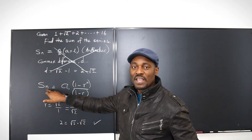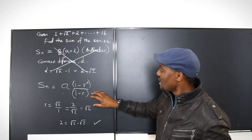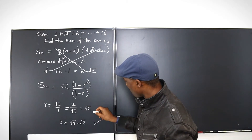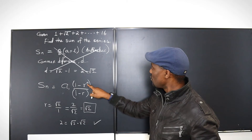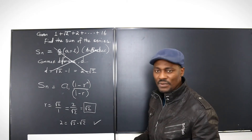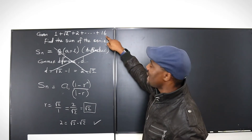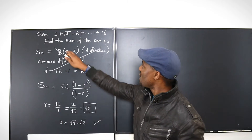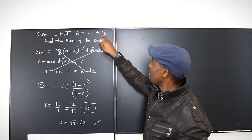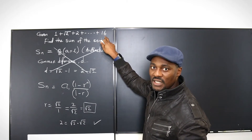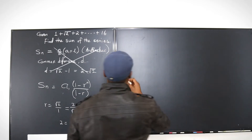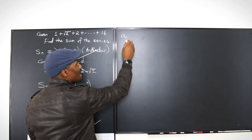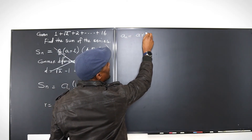Because it's a geometric series, I'll use the geometric sum formula. I have my first term, which is 1, and my common ratio, which is √2. I just need to know the number of terms. We know the last term: if the series has n terms, then the nth term is the last term, which is 16. So we can say 16 is the nth term. The nth term of a geometric series is a₁ times r raised to n minus 1.